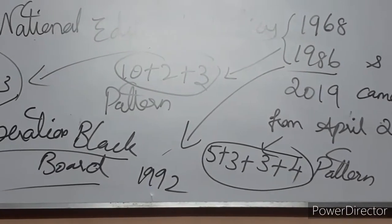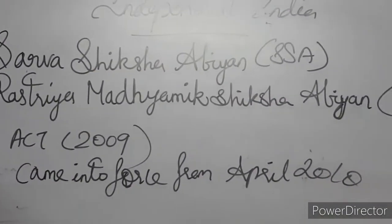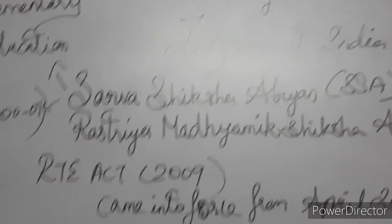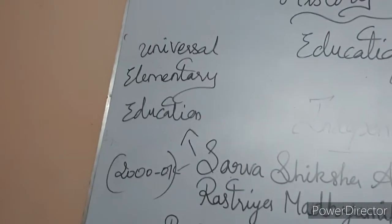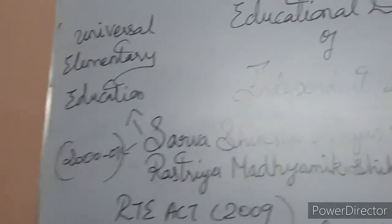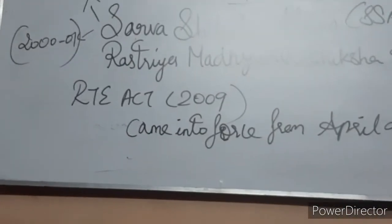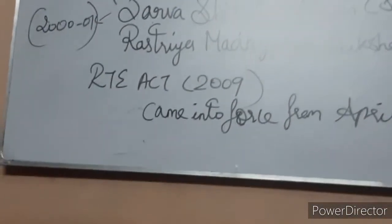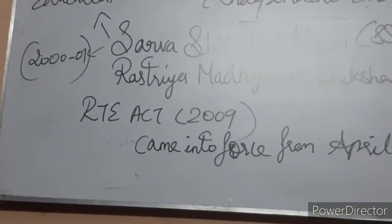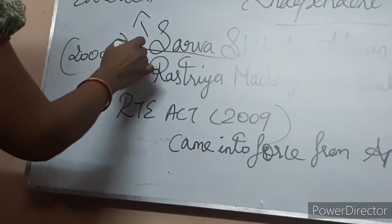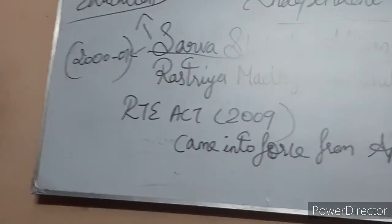Next, we are going to learn about the Sarva Siksha Abhiyan. Sarva Siksha Abhiyan was launched in 2001 to 2002. It introduced Universal Elementary Education. To achieve Universal Elementary Education, it was introduced as the Sarva Siksha Abhiyan — the primary vehicle for implementing the provisions of the right of children to free and compulsory education.